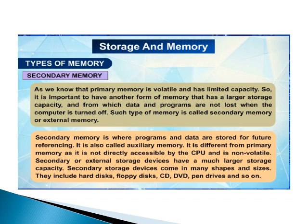Since primary memory is volatile and has limited capacity, it is important to have another form of memory with large storage capacity from which data and programs are not lost when the computer is turned off. Such memory is called external memory or secondary memory. Secondary memory is where programs and data are stored for future referencing, and is also called auxiliary memory. It is not directly accessible by the CPU and is non-volatile. Storage devices come in many shapes and sizes, including hard disk, floppy disk, CD, DVD, pen drive, and more.